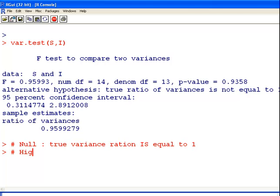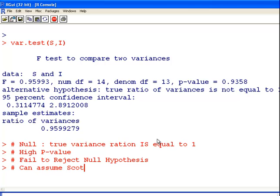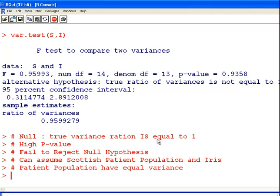We have a high p-value. Very high p-value. So in this case, fail to reject null hypothesis and can assume Scottish patient population and Irish patient population have equal variance. That's your conclusion there.